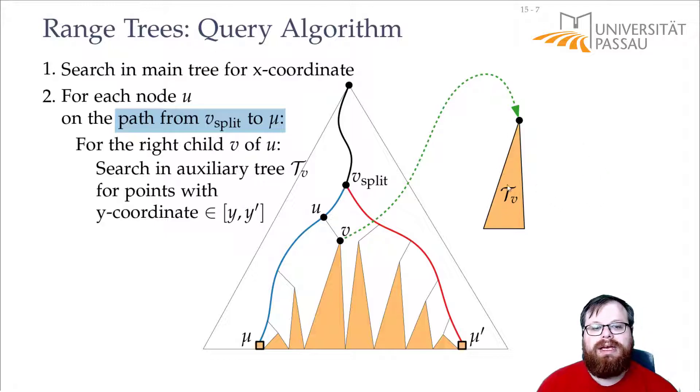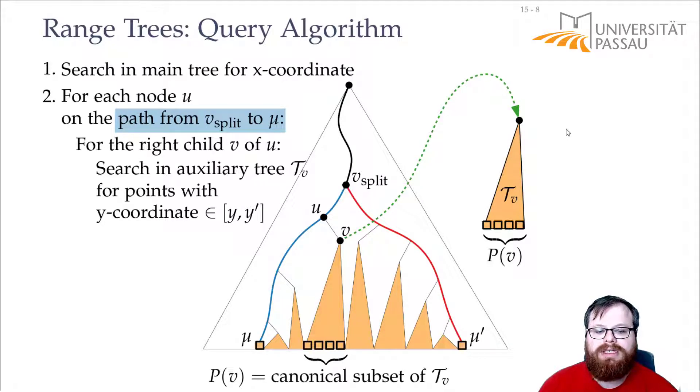Now here we do the query again, but for the bottom and the top boundary of our query rectangle. That's the only difference that we have to the one-dimensional case. In the one-dimensional case we just reported all these points, now we again have to do a one-dimensional query in this auxiliary tree.